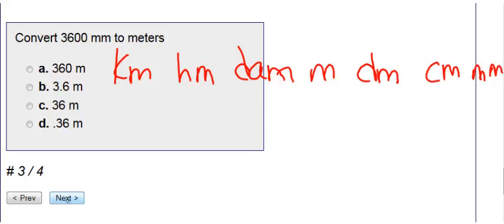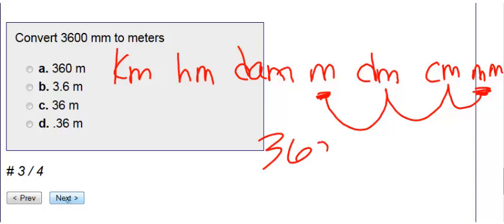So here's our conversion chart. We started at millimeters back down here and we're going to move it to meters here. So I'm going to count my places. One, two, three places to get there to the left. So right now I have this, my decimal is here. So since I need to move it three places to the left, I do the same thing with my decimal. One, two, three places to the left, therefore I get 3.6 meters as my answer.